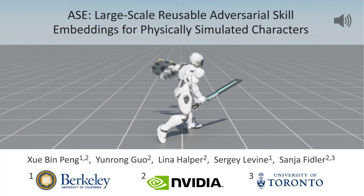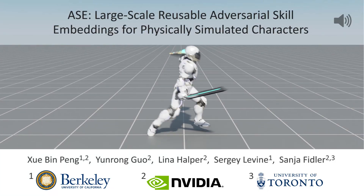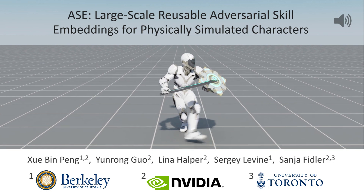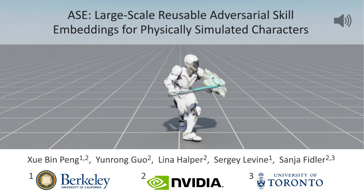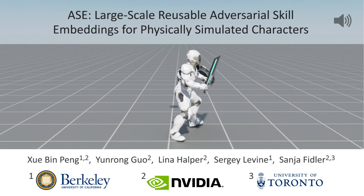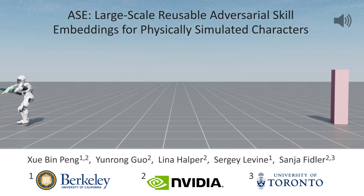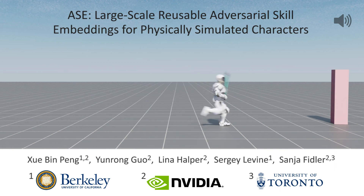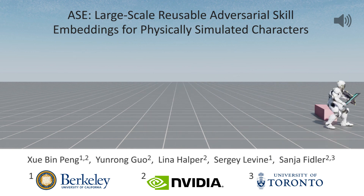In this paper, we present a scalable adversarial imitation learning framework that can train general-purpose motor skill models on large unstructured motion datasets. The learned skills can then be reused to solve diverse downstream tasks, while enabling a physically simulated character to produce naturalistic behaviors that resemble the original dataset.